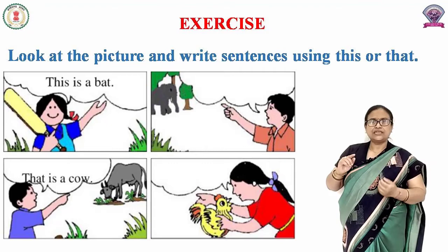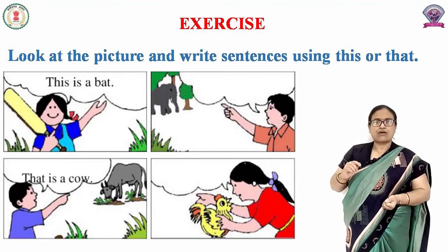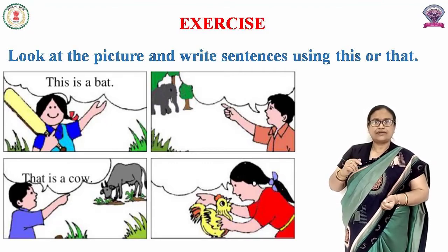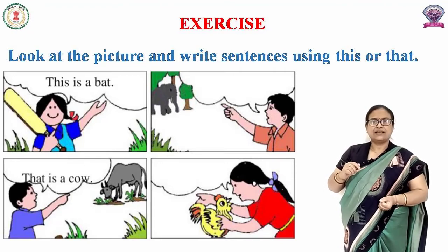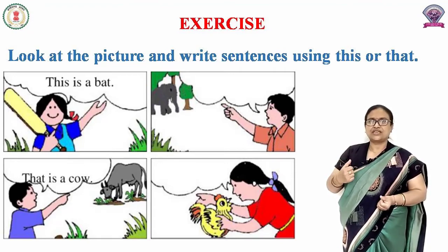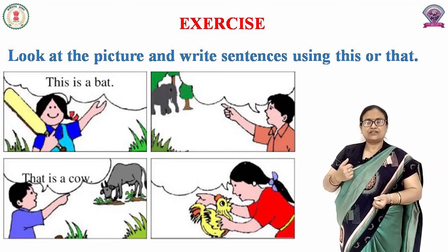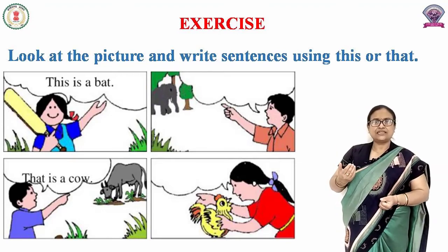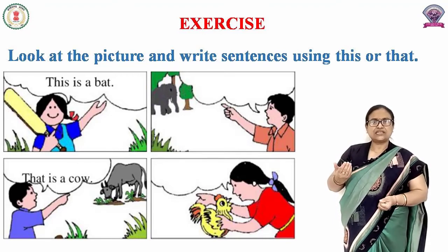बच्चों चित्र देखो, यहाँ पर एक हाथी दिखाई दे रहा है। और अगली चित्र में हमको एक मुर्गी दिखाई दे रही है। हाथी हमें दूर दिखाई दे रहा है, और मुर्गी हमें पास में दिखाई दे रही है। तो हम कैसे प्रयोग करेंगे — 'this' प्रयोग करेंगे या 'that' प्रयोग करेंगे?